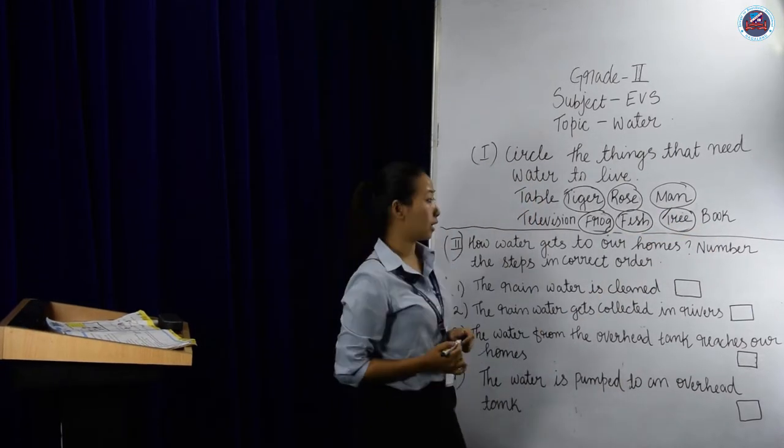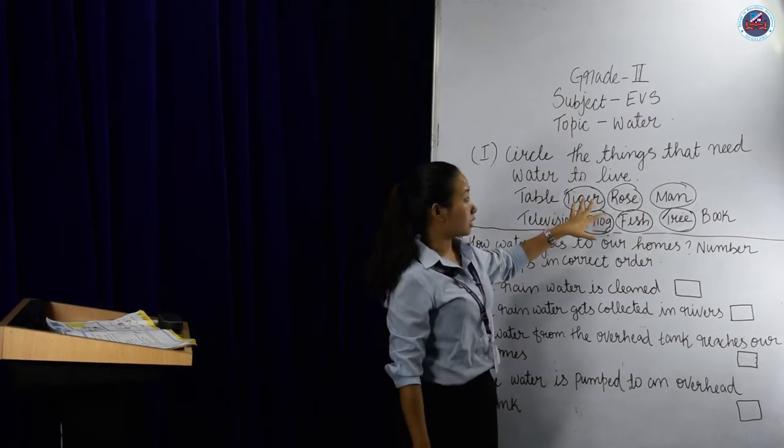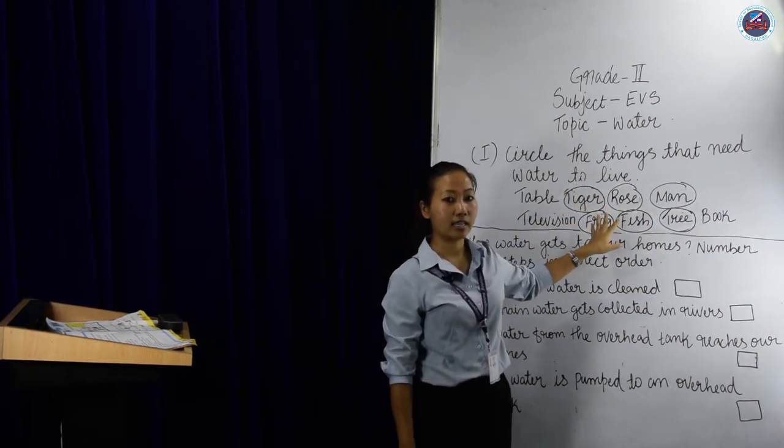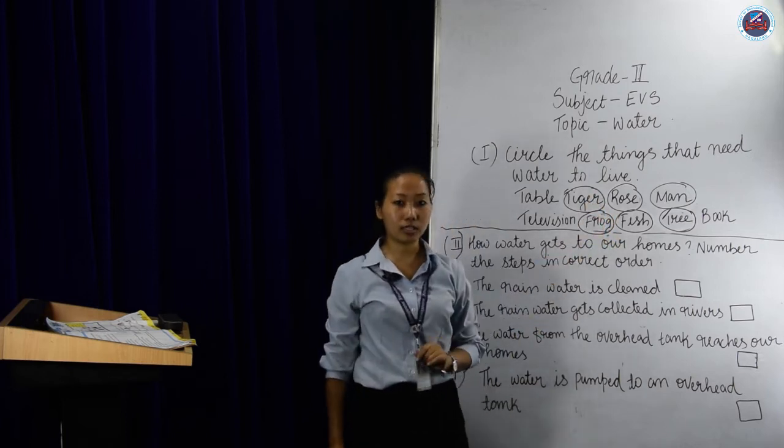Because book is a non-living thing. So why did we circle this? We have circled this because they are all living things and they need water to live. They cannot live without water.